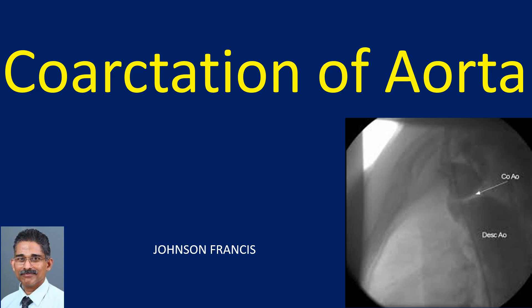Coarctation of aorta is a narrowing in the proximal descending aorta. It can be a discrete narrowing or a tubular one. The usual site is opposite the erstwhile ductus arteriosus, and it is thought to be due to an extension of the process of natural closure of the ductus to the aorta.